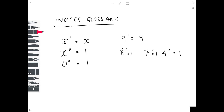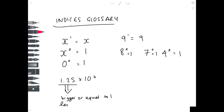Lastly, when looking at indices we often need to write in standard form — something like 1.25 × 10 to the 7. It's important to note that this first number must be greater than or equal to 1 and less than 10. We call this standard form.